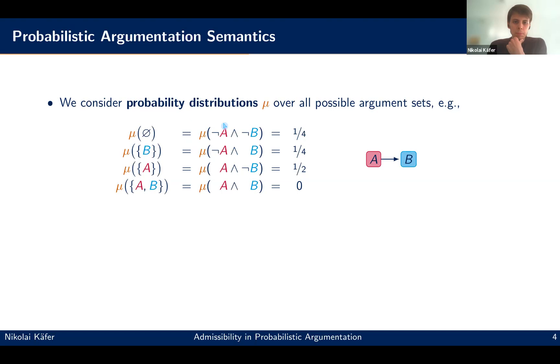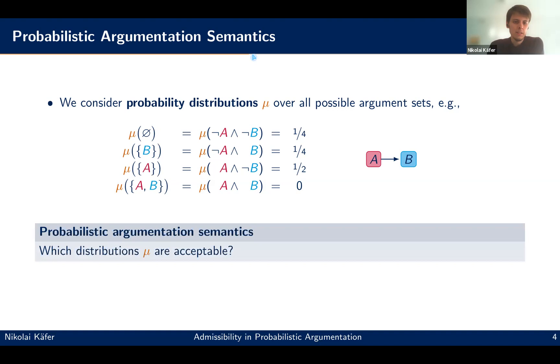So we consider probability distributions, like here mu, over all possible argument sets. So here, for this very small argumentation framework with just two nodes A and B and one attack, we get here these four possible argument sets. We can also denote these sets here by Boolean formulas. And then a distribution assigns a probability value to each of those. And of course, the sum of those needs to sum up to one, such that it is a probability distribution. And then argumentation semantics in the probabilistic world just answer the question, which distributions mu are now acceptable given an argumentation framework.